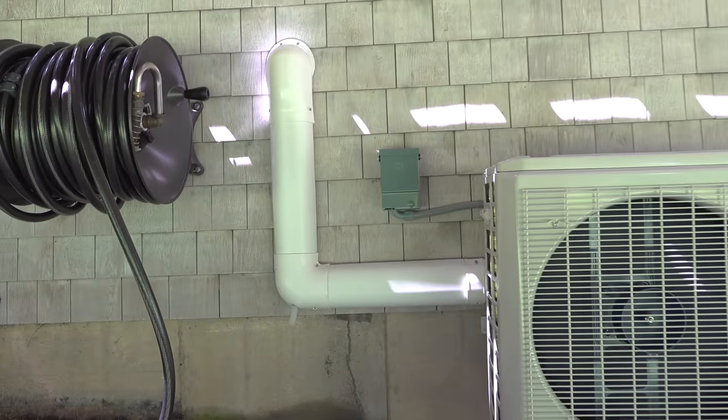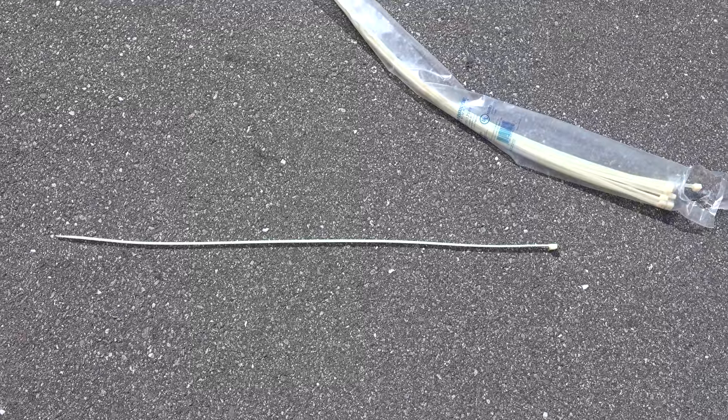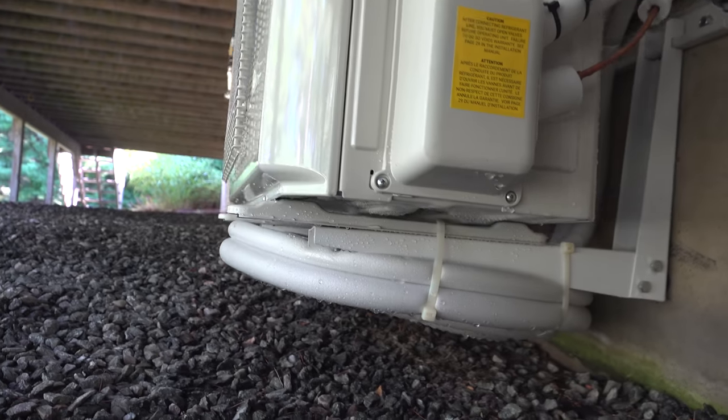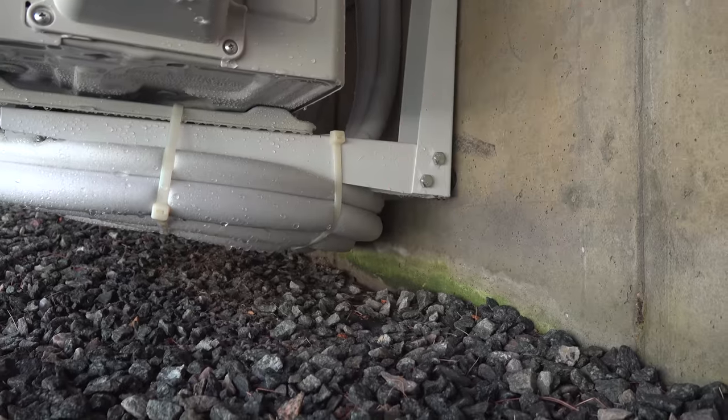So I found an easy solution, which was just to use these HVAC nylon ties. This cut those pipes off the ground and still kept them horizontal, which is what the directions say you should do. And at this point, the install was looking good and everything is complete. All I had to do was actually use the unit.